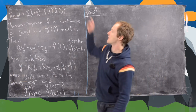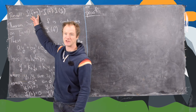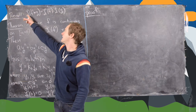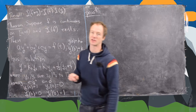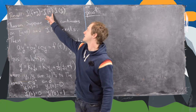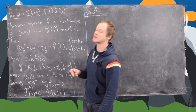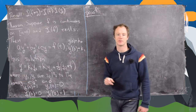Let's first recall that if we take the convolution of f and g and then apply the Laplace transform, that's the same thing as applying the Laplace transform to f and g separately and then multiplying.